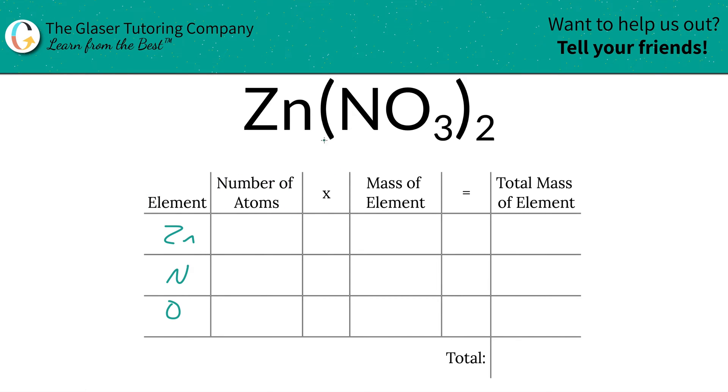Then we're going to write down the number of atoms of each, and that's where the subscripts come into play. If you don't see a subscript there, just put in a one. So we have one zinc. We have one nitrogen, but careful. It's part of the nitrate polyatomic anion, and we really have two of those anions. So we have actually two nitrogens.